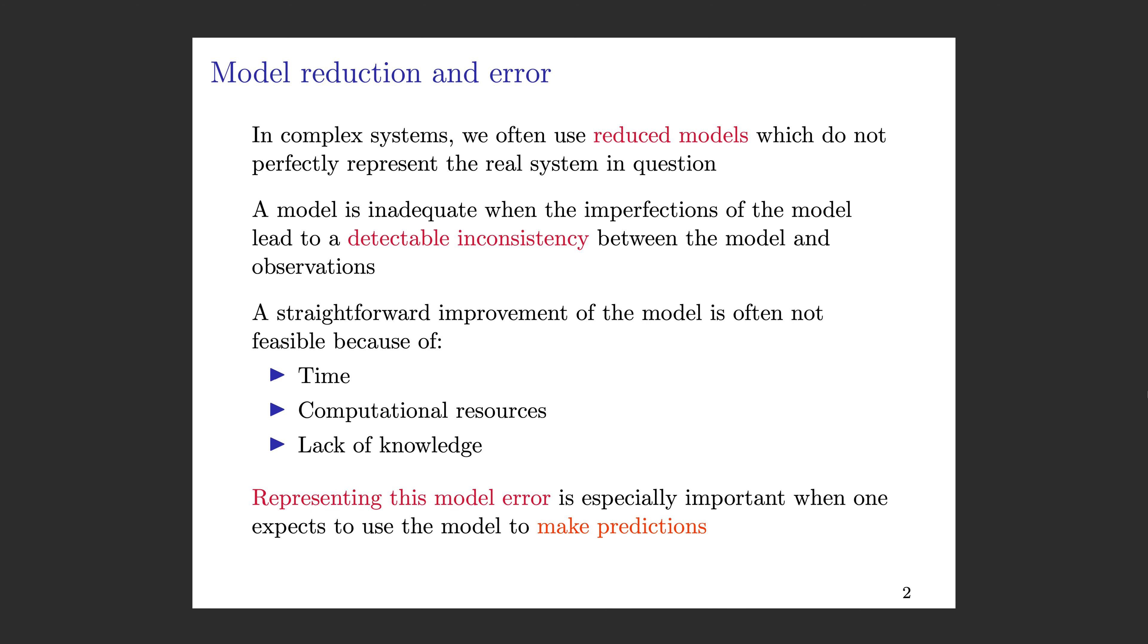I've come to this problem from the world of model reduction and model error. Model error has a lot of names—it's also called model discrepancy, model inadequacy, or model form uncertainty. In complex systems, we often use reduced models which do not perfectly represent the real system in question. A canonical example is using Newtonian physics to describe motion of large bodies, ignoring relativistic and quantum effects, which is completely fine in a lot of situations.